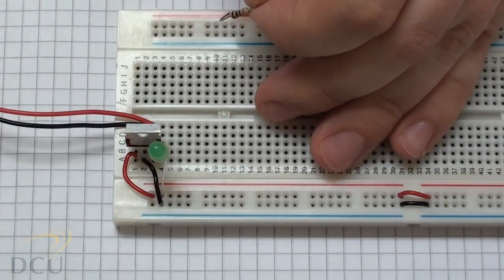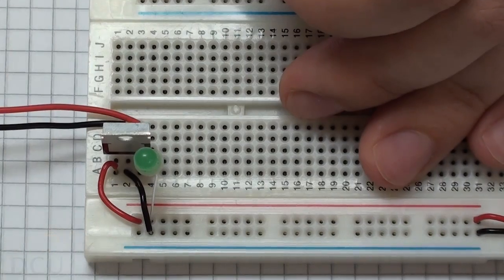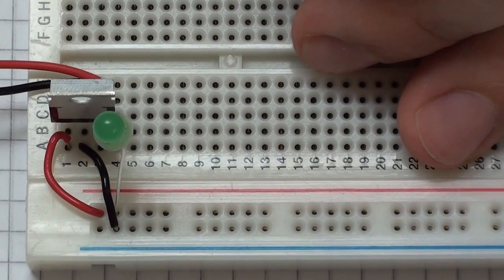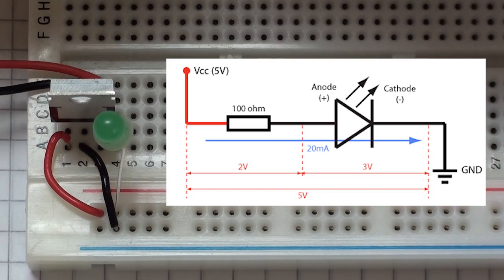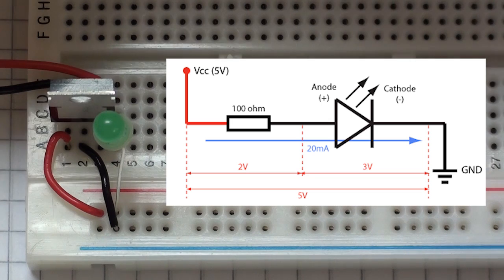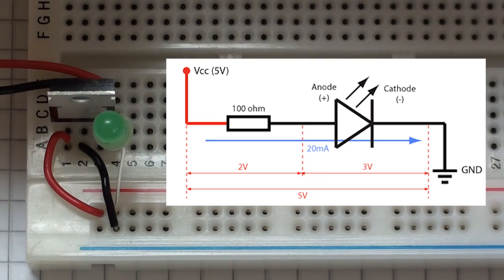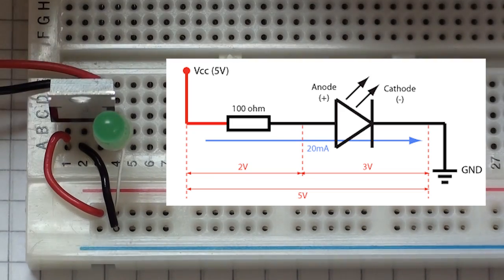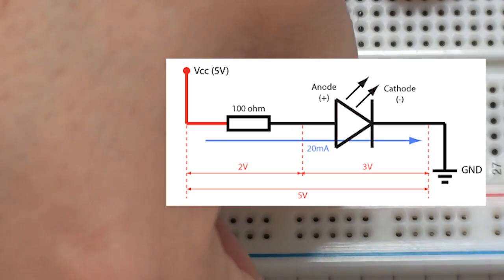We need to choose a suitable value for our resistor. The LED expected a maximum voltage of 3 volts, which means that we need to drop 2 volts to our resistor to ensure that the 5 volt supply is divided in that ratio. So 2 volt drop, 5 volt supply, means that we need a 100 ohm resistor. So we plug our 100 ohm resistor in across.